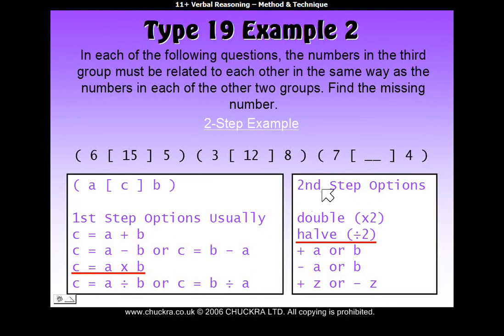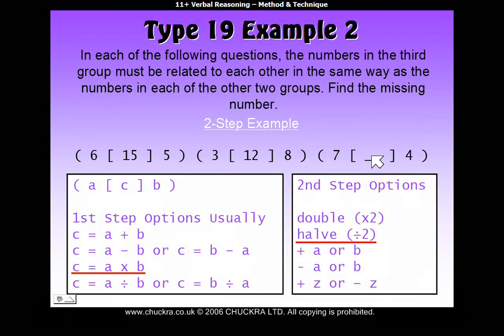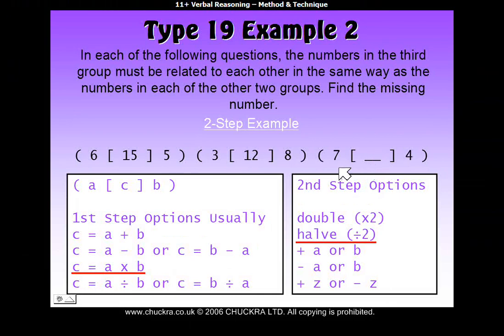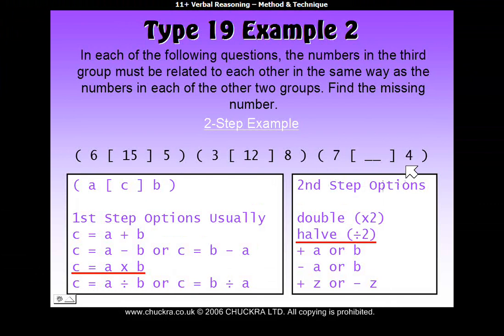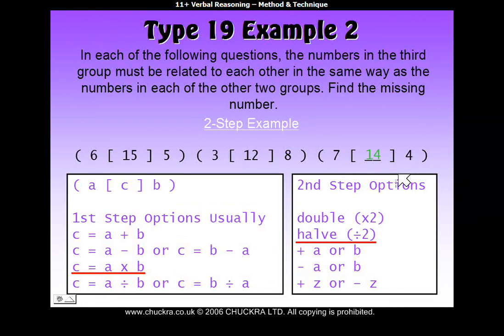So let's apply that rule to the third group to find our actual answer. A times B is 7 times 4, which is 28. Halving that gives us 14. And there's our answer.